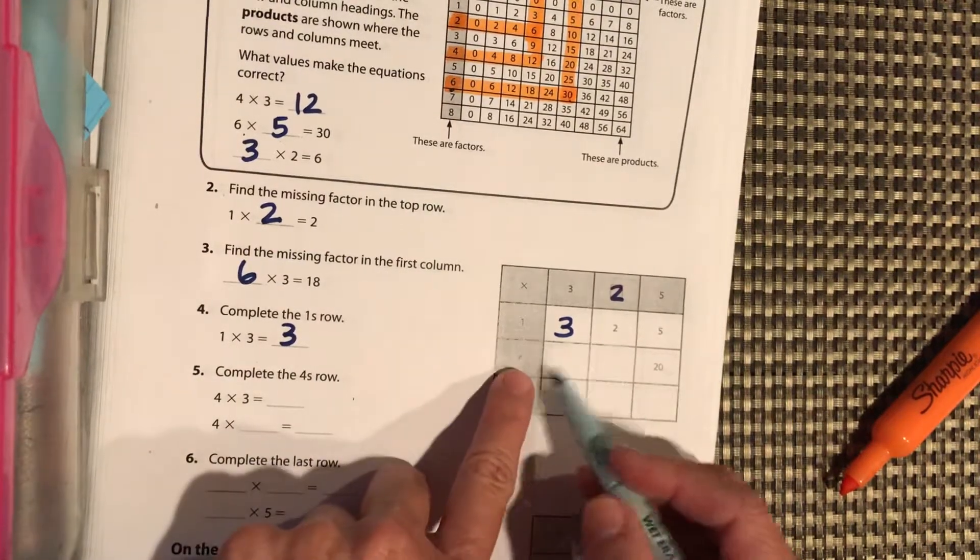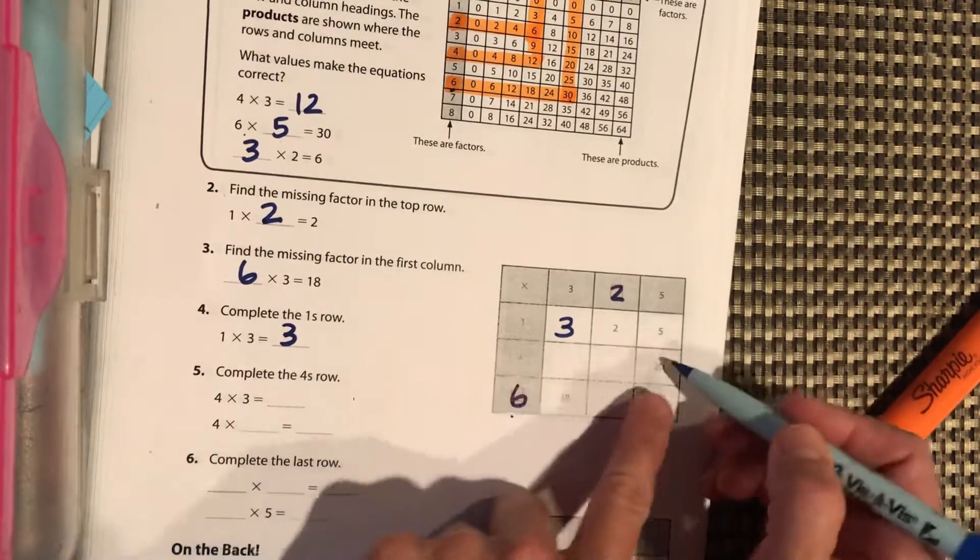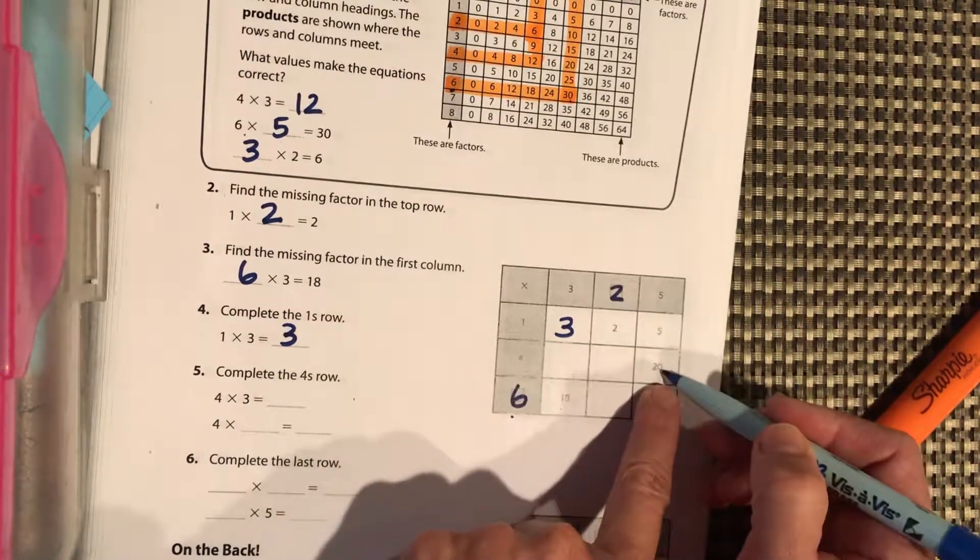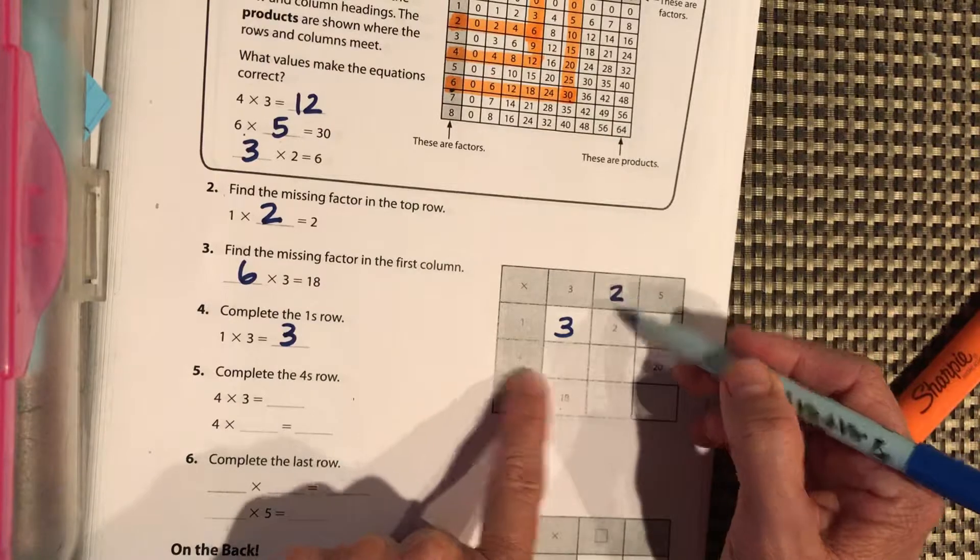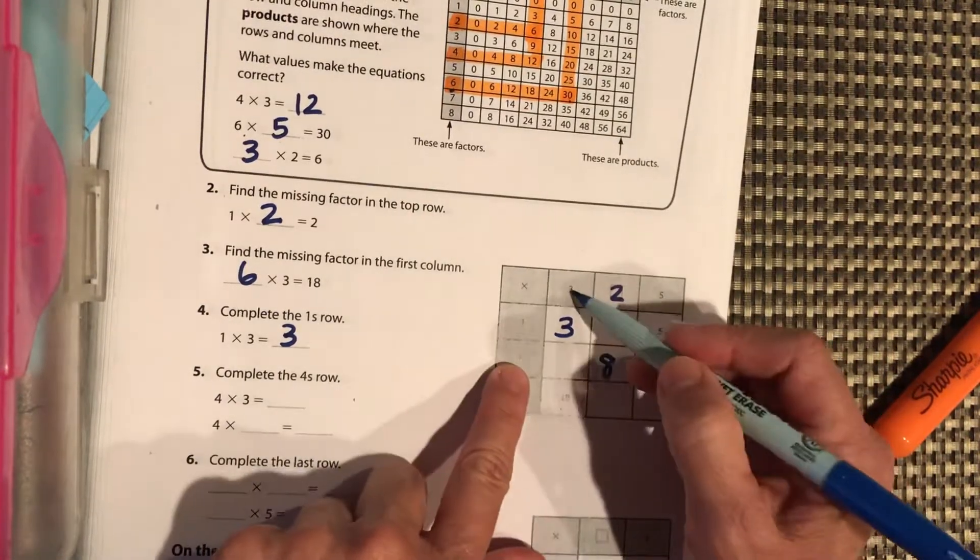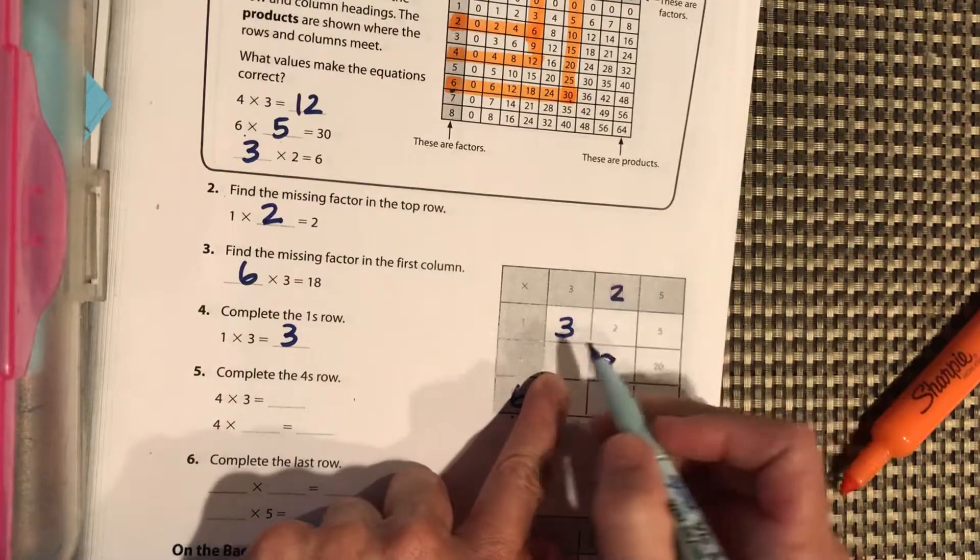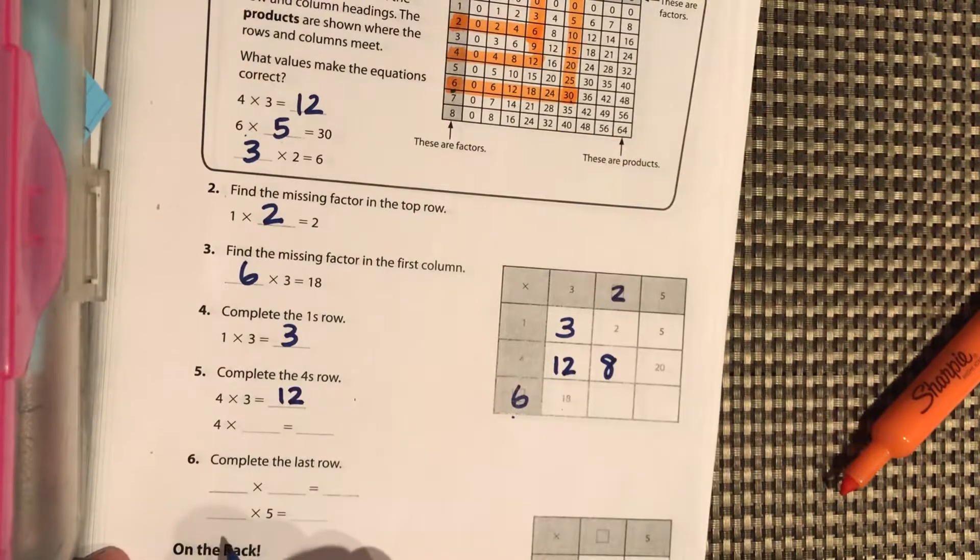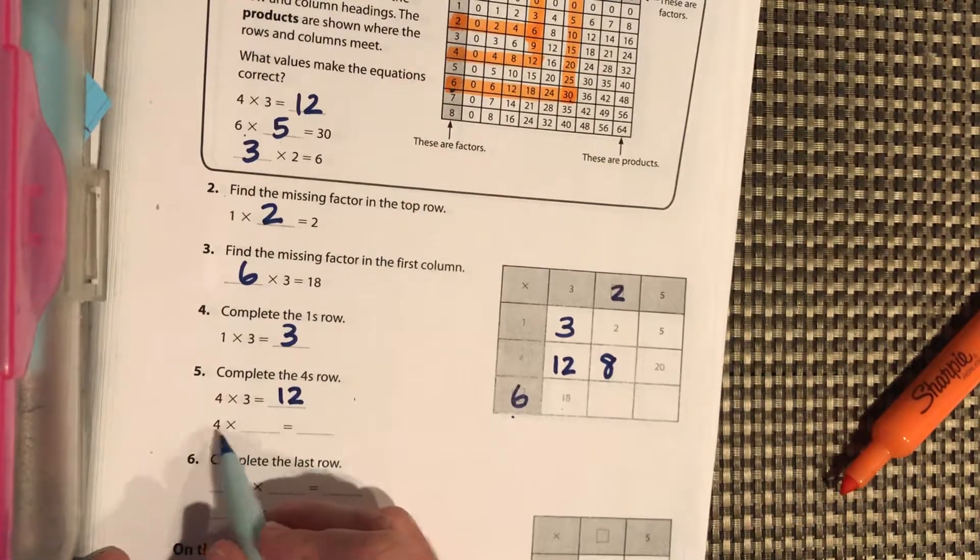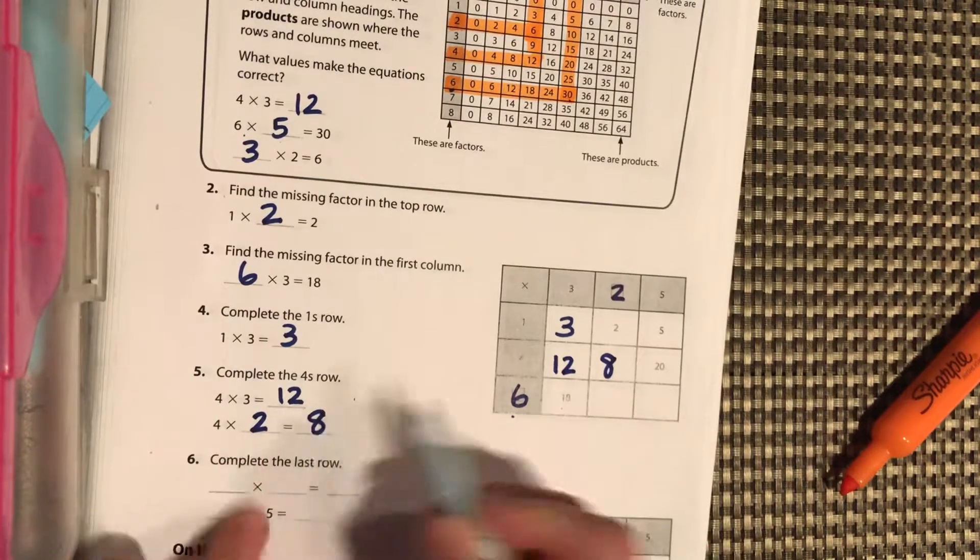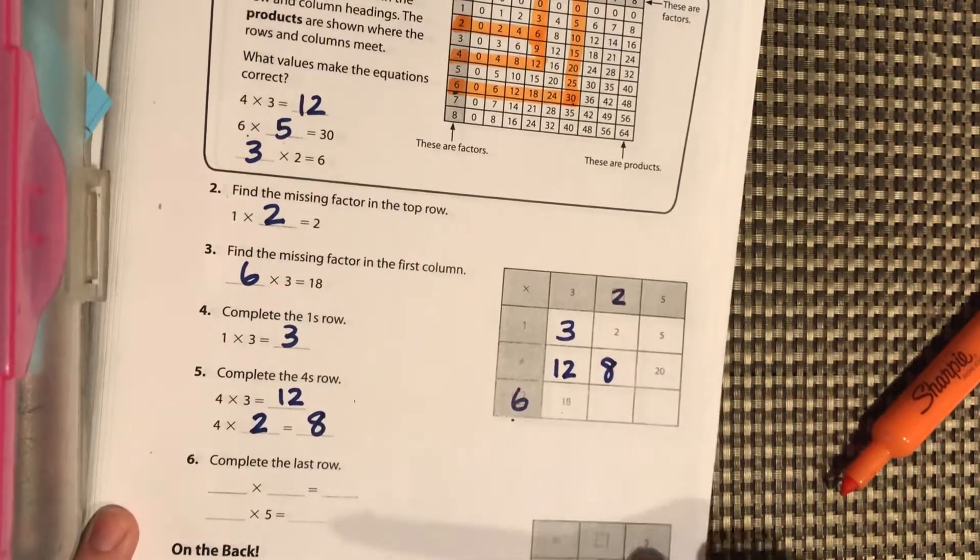Now complete the 4's row. They already gave us 1 times 5 is 20. I'm sorry, 4 times 5 is 20. So now we have 4 times 2, and that's going to equal 8, and then 4 times 3 equals 12. So 4 times 3 equals 12, and then here it was 4 times 2 is equal to 8.